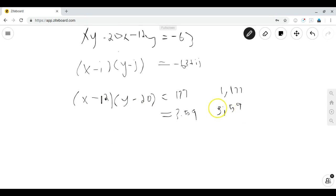So we have x minus 12 equals 1. That gives x equals 13 and y minus 20 is 177. And that gives y equals 197. But that doesn't work because 13 is less than 197.